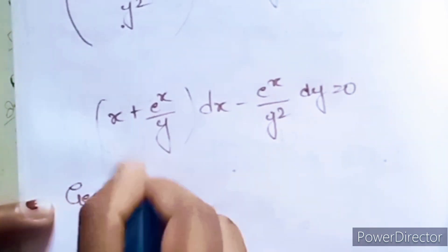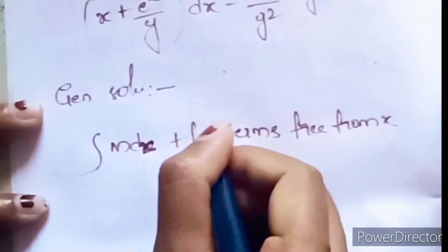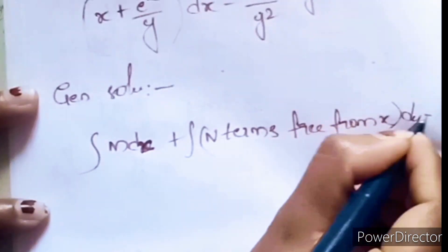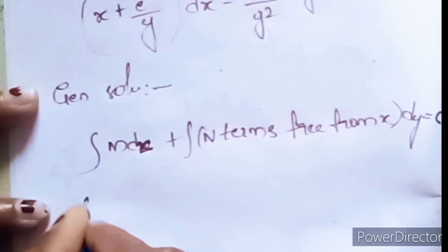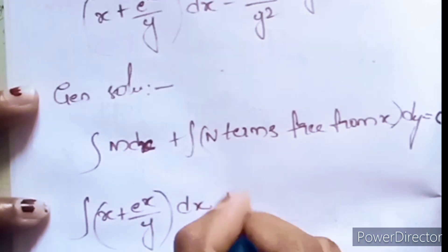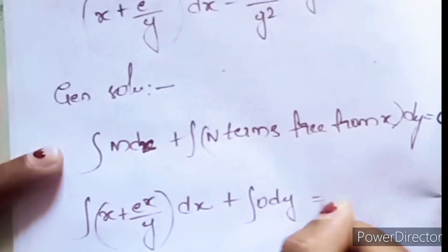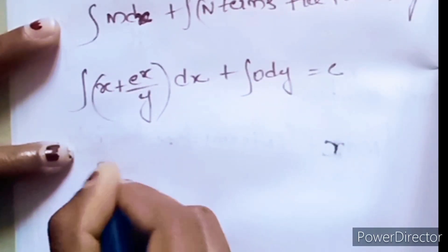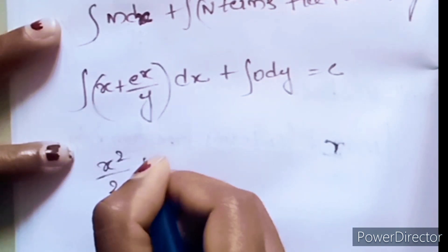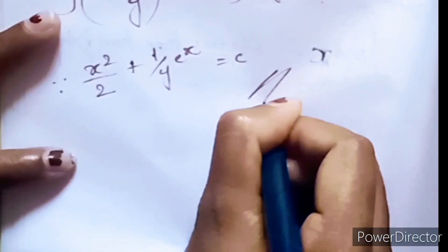Now the general solution is ∫M dx plus N terms free from x, times dy equals c. Integrating M: ∫(x + eˣ/y) dx gives x²/2 plus (1/y)·eˣ. There are no N terms free from x, so 0·dy. Therefore the general solution is x²/2 + eˣ/y = c.